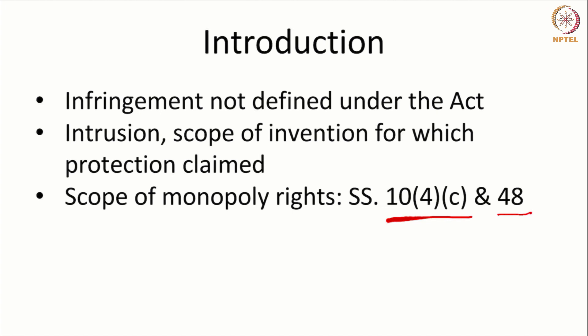The patent specification shall end with the claims describing the scope of the invention. The rights that are protected are enumerated in Section 48: the right to manufacture, the right to sell, the right to offer for sale, the right to use, and the right to import. Any intrusion into these rights — when a patentee's rights with regard to manufacture, sale, offer for sale, import, and use is affected — then we can say there is infringement of the patent.